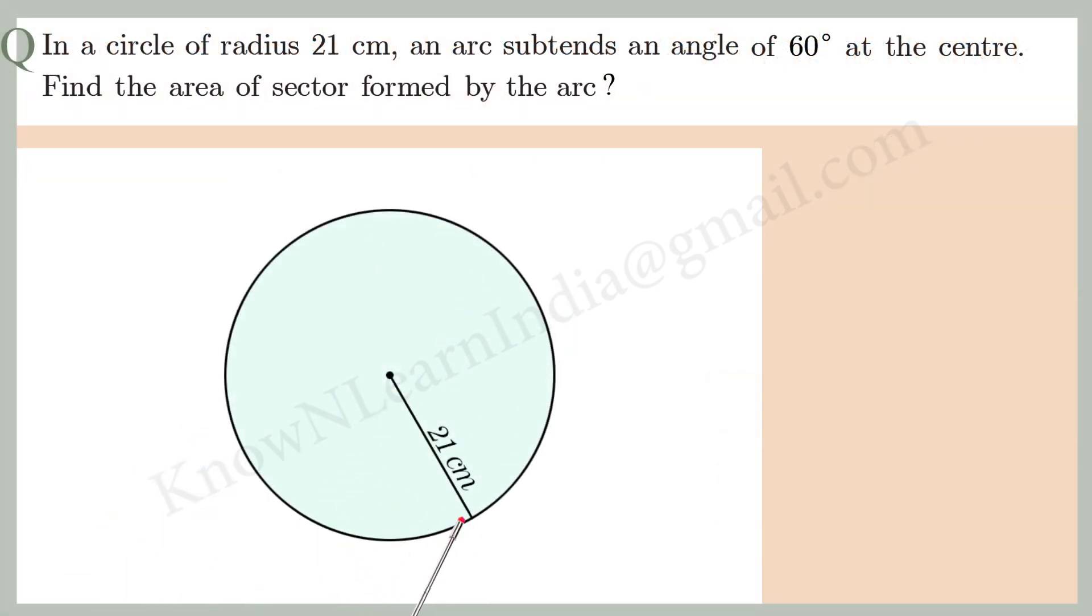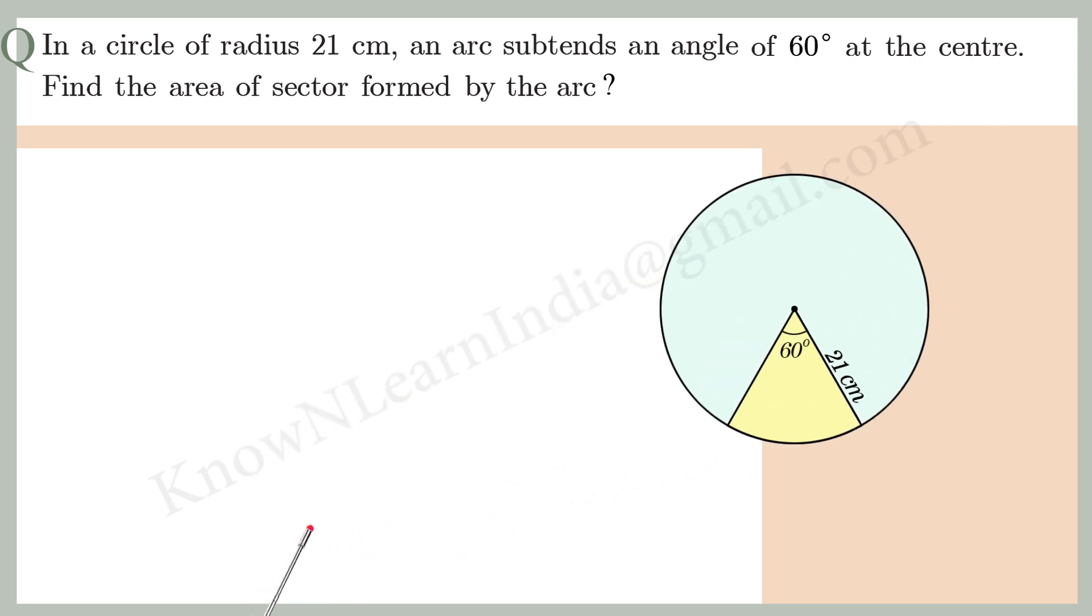In a circle of radius 21 cm, an arc subtends an angle of 60 degrees at the center. Find the area of sector formed by the arc. Let's see how we can find the answer.